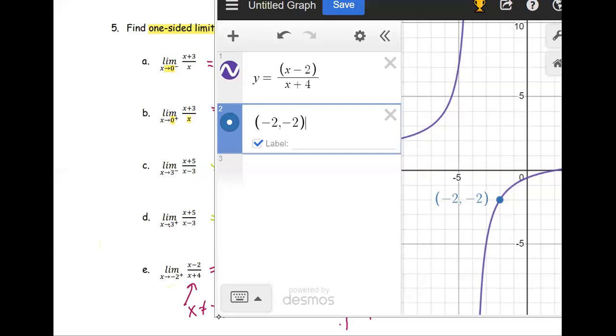Negative 2 is a coordinate on the graph. And it means the left side limit and the right side limit approach to the same value. Or the same function value, negative 2.